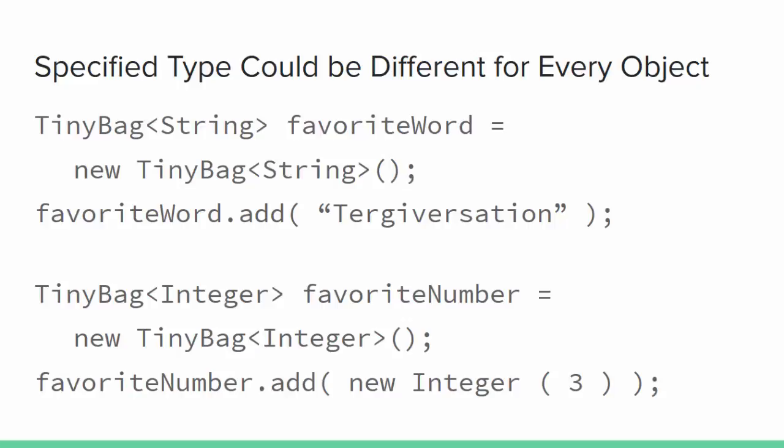Each collection object has the generic type specified when it was created. Here I have a favorite word object that's a tiny bag of type String, and I have a favorite number tiny bag that is of type Integer.